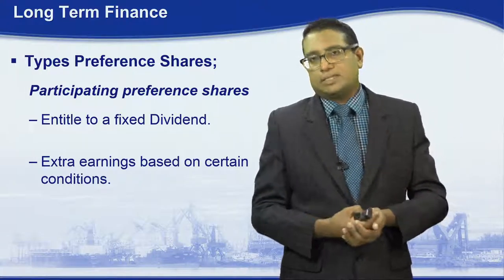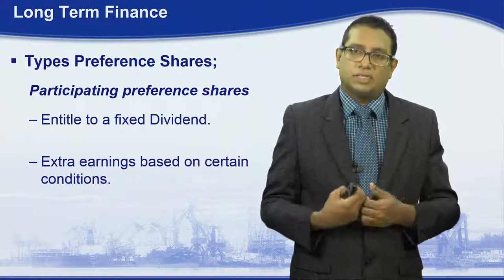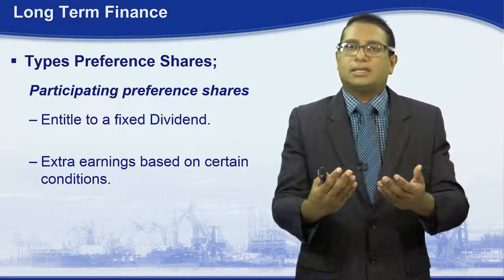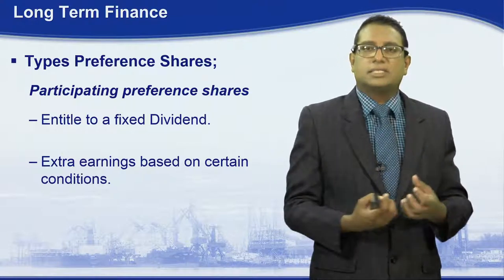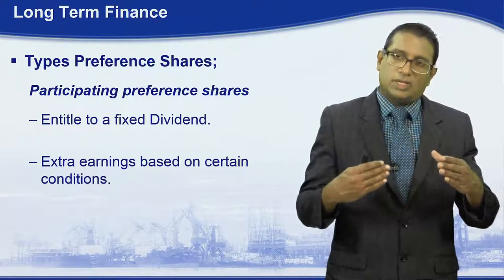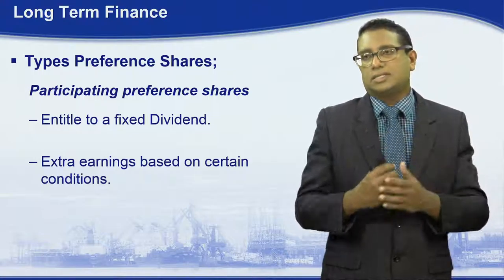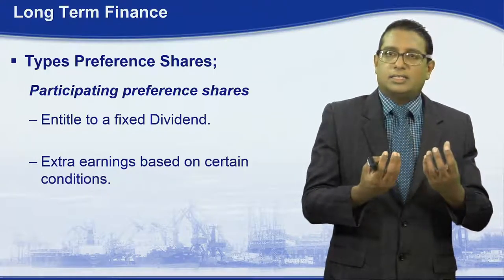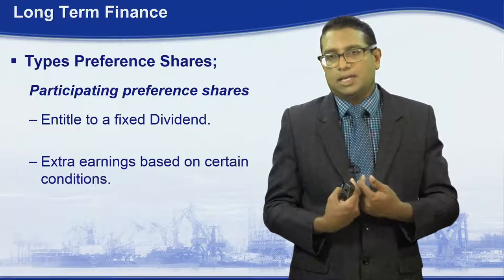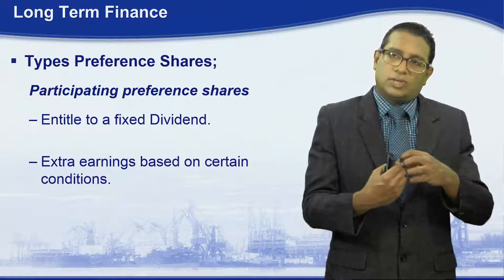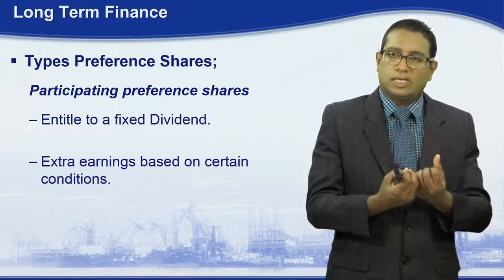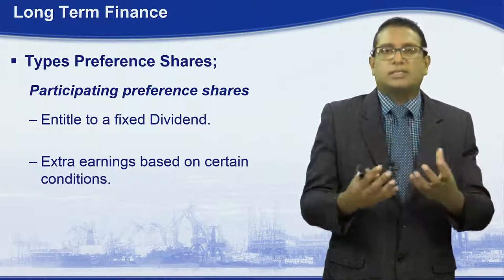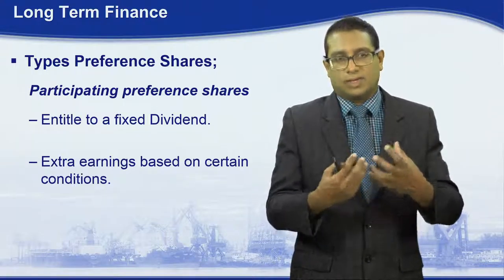The other type we have discussed is participating preference shares. Here the difference is there is a separate extra earnings that can be ascertained, but the shareholders and the directors have agreed on certain conditions. These are the basic details of issuing preference shares — unlike ordinary shareholders, companies need preference shareholders to maintain a certain status or level of participation.